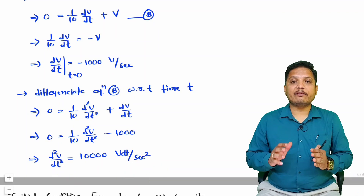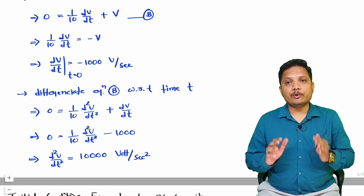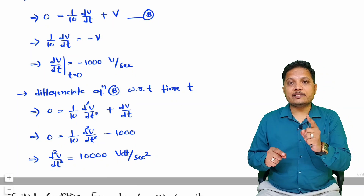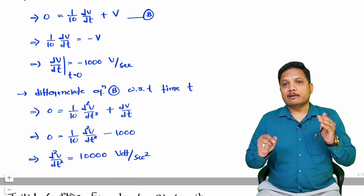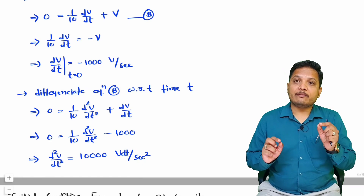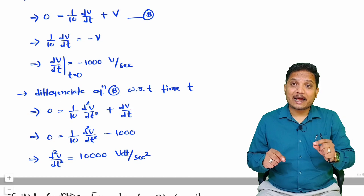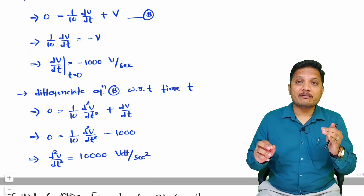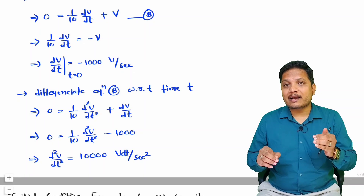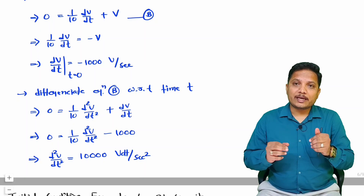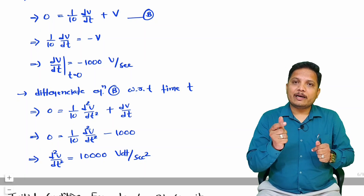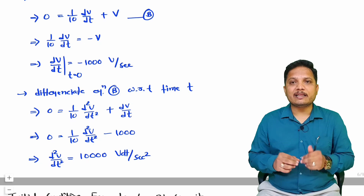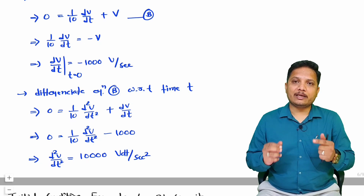This is how we identify the value of voltage and its derivatives at time t equals 0 using initial conditions. A very essential point to remember: when you connect a current source in parallel with an inductor, initially it will act as an open circuit. I have seen students make mistakes on this, so this fundamental concept is what I want to convey through this practical example. I hope you have understood this. If you have any further queries, place them in the comment box — I will be happy to help. Thank you so much for watching.